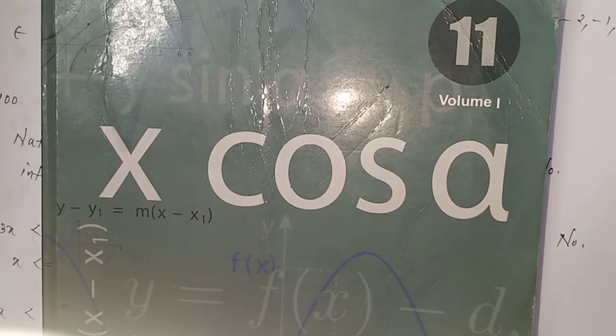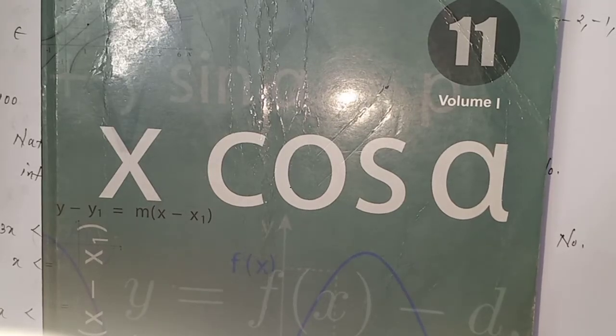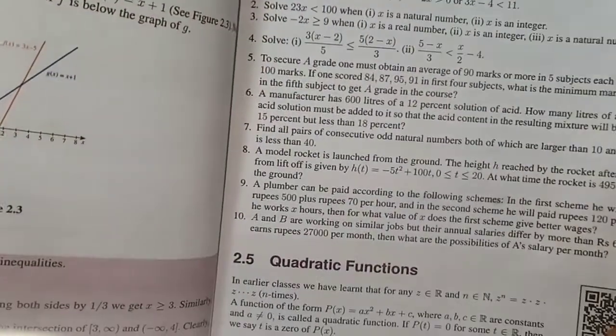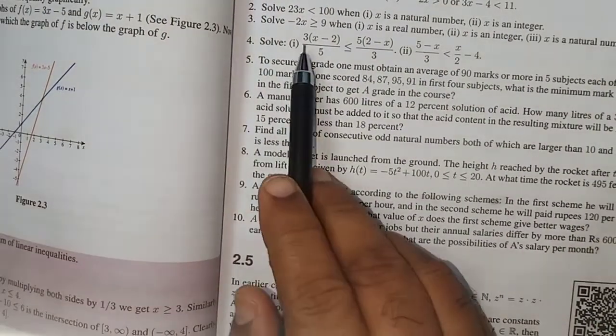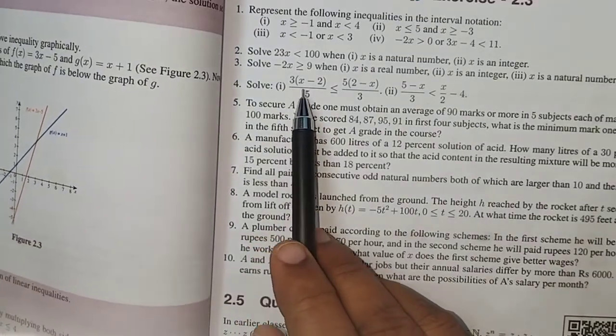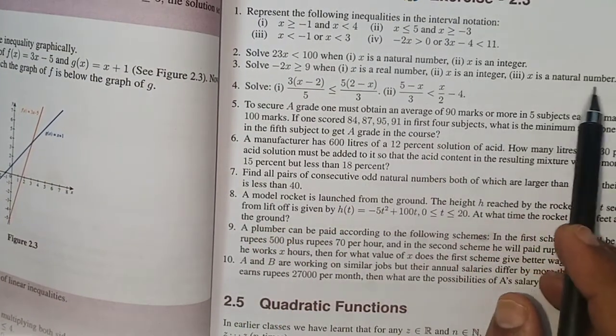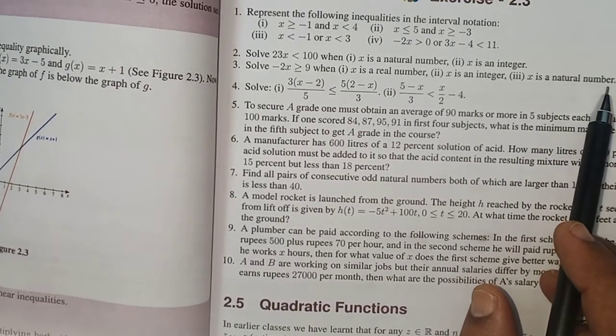Hi students, this is Sivakumar, Levin Standard Mathematics, chapter number 2, continuation of exercise 2.3. Now, problem number 3. Solve -2x which is greater than or equal to 9 when x is a real number, x is an integer, and x is a natural number, totally 3 subdivisions.